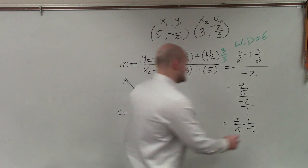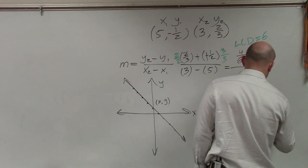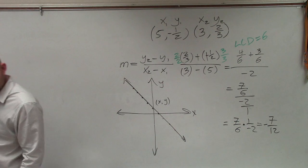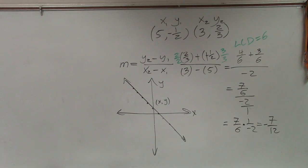So now, my final answer is going to be negative 7 twelfths, which would be your slope between the two points. Did you leave that two days ago? Oh, OK.